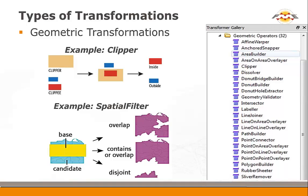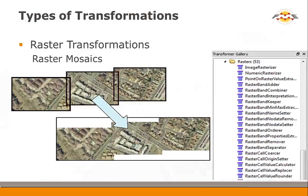The transformer gallery has categories, and in the string category we have tools like string concatenator, attribute splitter, and more sophisticated ones like string replacer, which allows you to use extended regular expressions to search for string patterns, and string searcher for replacing patterns using sophisticated searching tools. On the geometric side there are quite a few tools for restructuring geometries, from the relatively straightforward clipper — taking clip polygons and breaking them out — to more sophisticated tools like the spatial filter, which looks for spatial overlaps and different types of spatial interaction.